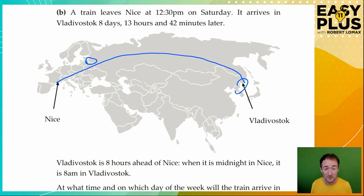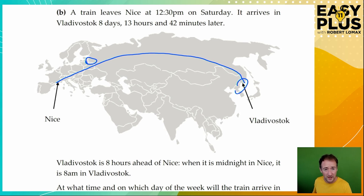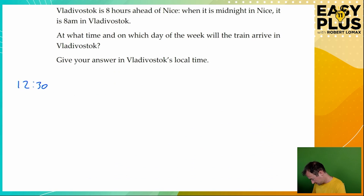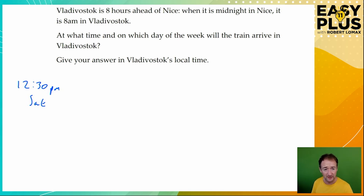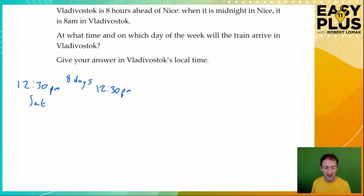As I mentioned earlier, you can adjust your times to take account of a time difference either at the beginning or at the end of your working. This time let's do it at the end. We start at 12:30 p.m. on Saturday. We get to Vladivostok eight days, 13 hours and 42 minutes later. Let's handle the days first: seven days would take us to the same time on the same day of the week, just a week later. So eight days takes us to 12:30 p.m. on Sunday.